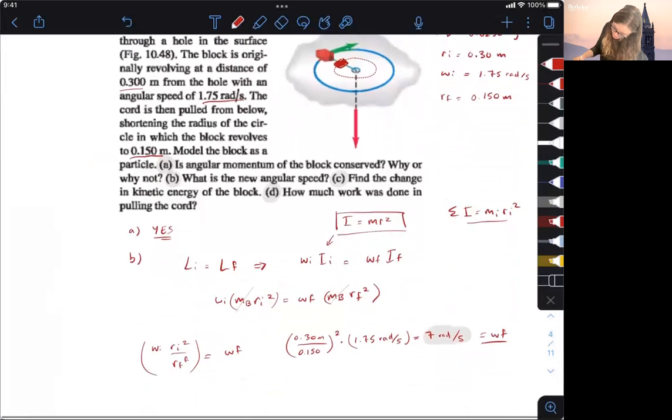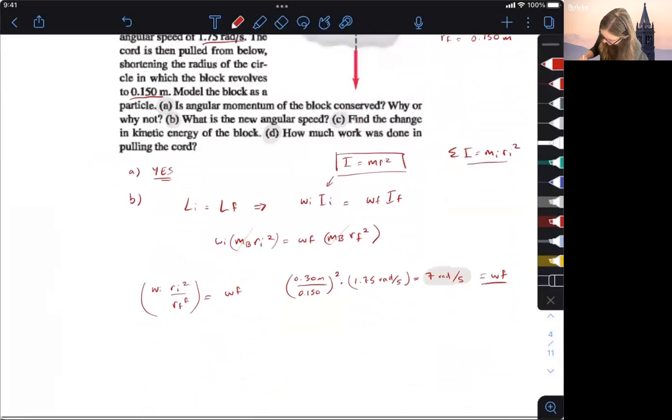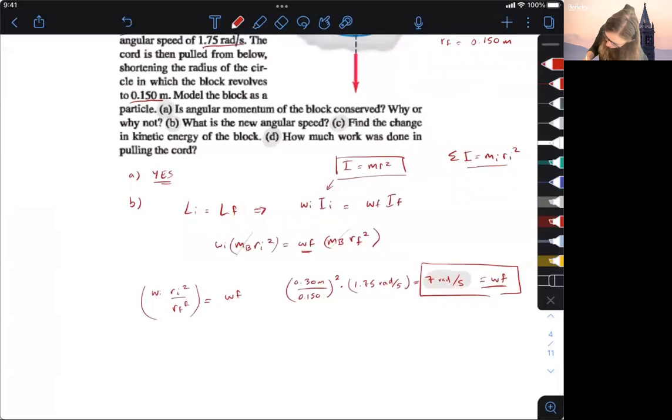All right. So that was what they asked us. What's the new angular speed? This is the new angular speed, 7 radians per second. And we found that because we know that momentum is conserved and we just solved for our WF. And we treated the block as a point mass.